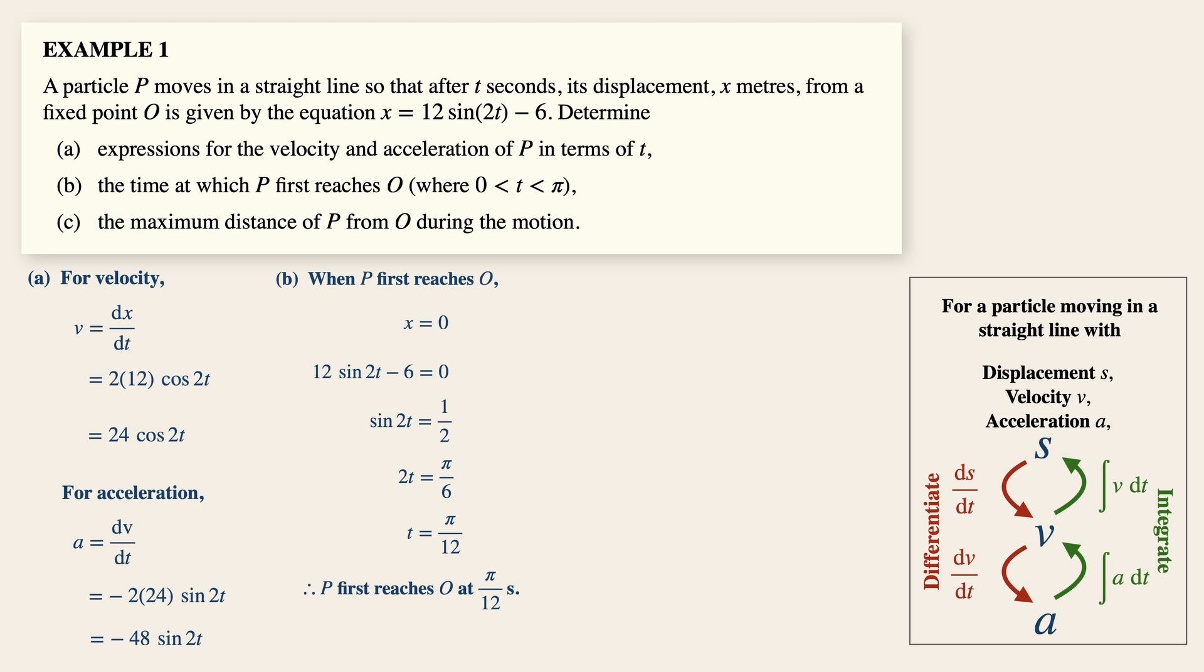Now part c is what we want to be more familiar with, to find the maximum distance of P from O during the motion. Now when you think of the word maximum distance, it has some relation to maximum displacement. So we can use the displacement time graph to illustrate this point. Just for your understanding, you need not draw this graph.